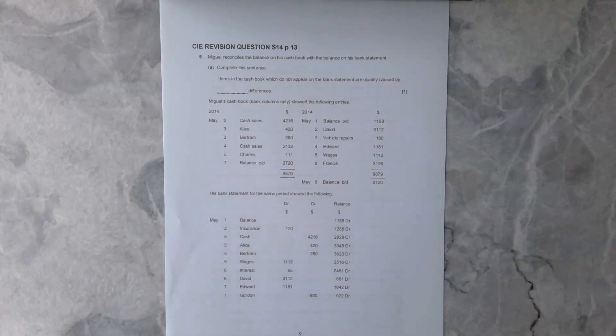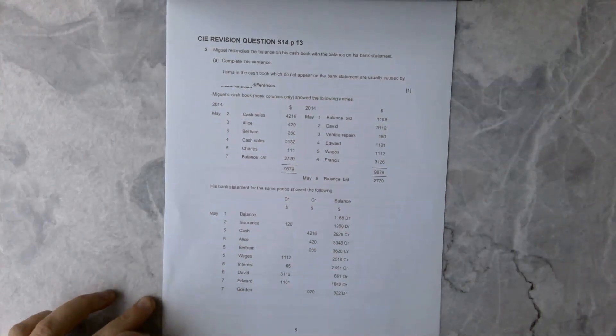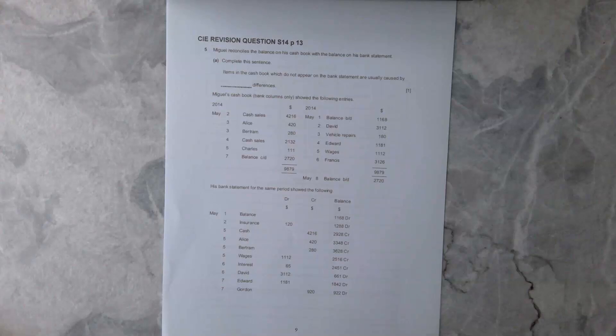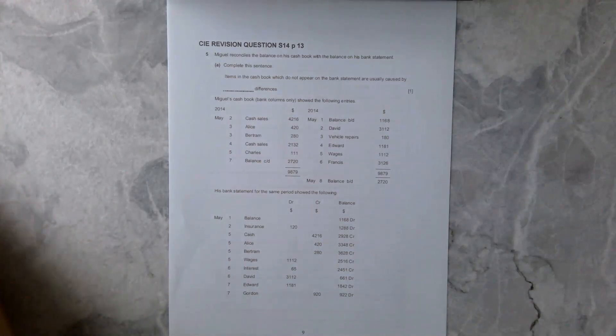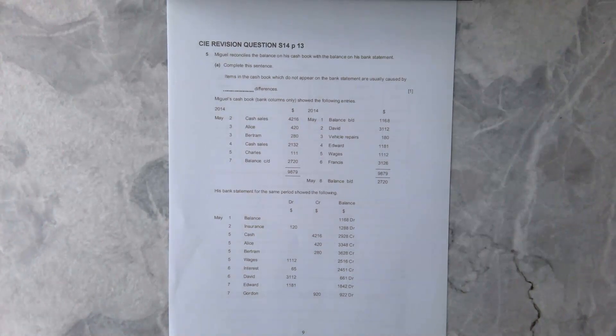Question number one I'm going to leave for you guys to do at home, that's pretty simple. I'm going to get into the nitty-gritty of it so we don't waste time. What we are looking at here is a cash book from Miguel and his bank statement in the same period. We're looking to identify things that are currently in the bank statement that are not in the cash book and vice versa.